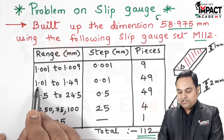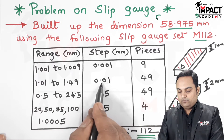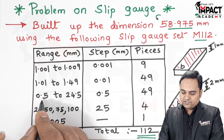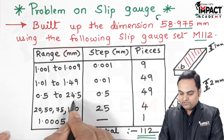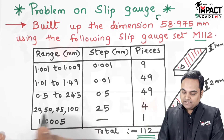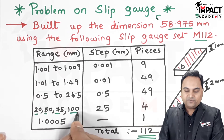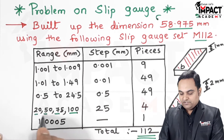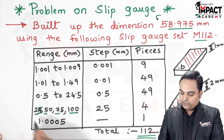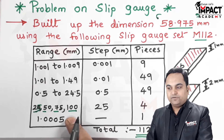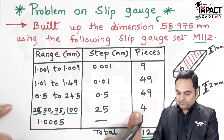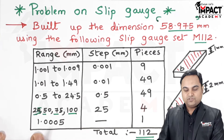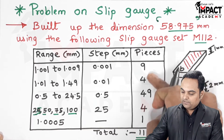The second range is 1.01 to 1.49 mm in steps of 0.01 mm, giving 49 pieces. The third range is 0.5 mm to 24.5 mm in steps of 0.5 mm, giving 49 gauges. The fourth range consists of blocks of 25, 50, 75, and 100 mm in steps of 25 mm, giving four pieces. Finally, there is a single slip gauge of 1.005 mm.